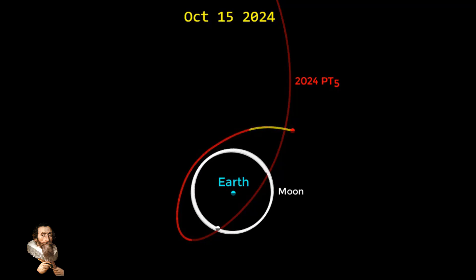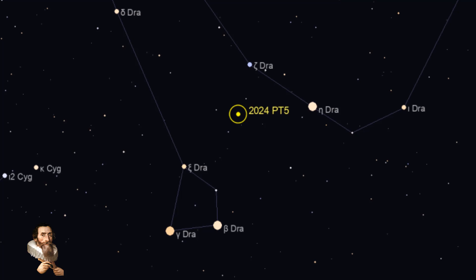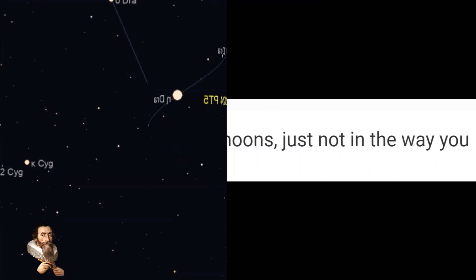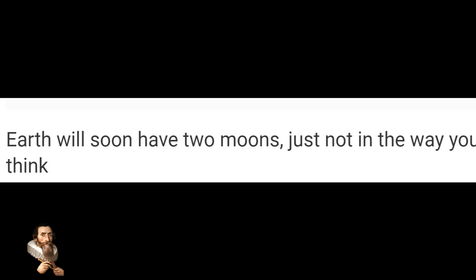The temporary capture of 2024 PT5 is a result of its close approach to the planet at a relatively low velocity. Earth's gravity will alter the asteroid's path, causing it to loop around our planet for about 56 days. However, it will not complete a full orbit around the Earth, making it a temporarily captured flyby rather than a true mini-moon.